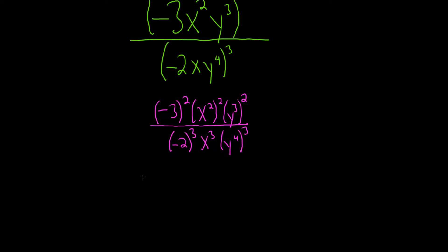All right, so this is equal to, when you square a negative number it becomes positive. So 3 squared is 9, so we'll get 9, and then here you multiply. You do 2 times 2, so that's x to the 4. Same thing here, you multiply, so 2 times 3 is y to the 6th over